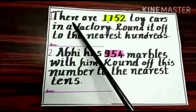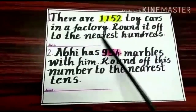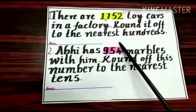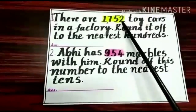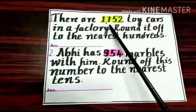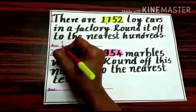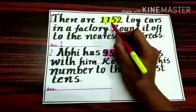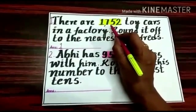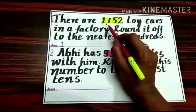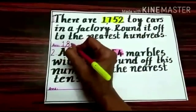Children, here are a few more examples. First: there are 1,752 toy cars in a factory — round it off to the nearest 100. We consider up to the hundreds place; the thousands digit stays as it is. 752 lies between 700 and 800, and it is more than the middle number, so round up to the next 100 — that is 800. The answer is 1,800.